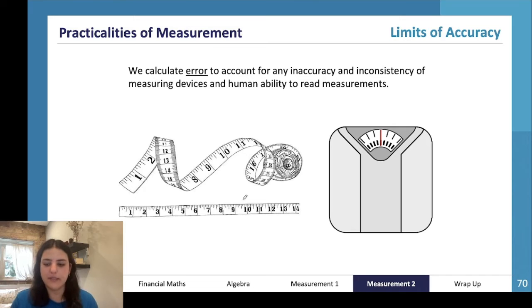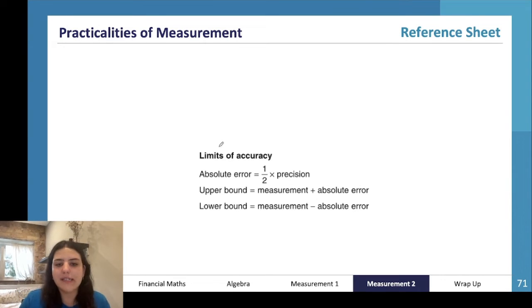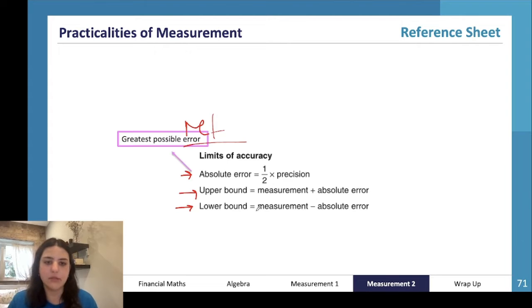So limits of accuracy basically tell us mathematically where the actual measurement is likely to exist on what scale. This is exactly what will come on your reference sheet. It will have these three pieces of information: absolute error is equal to half times the precision, the upper bound is the measurement plus the absolute error, and the lower bound is the measurement minus the absolute error.